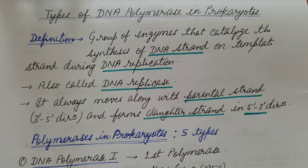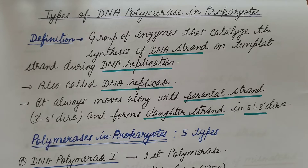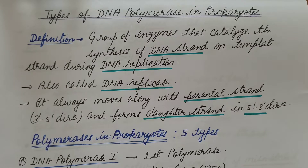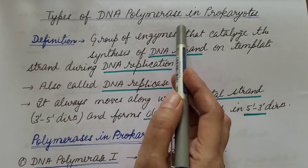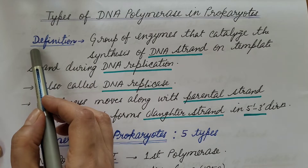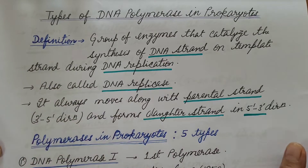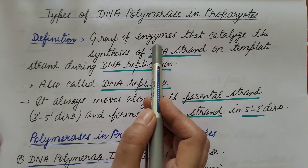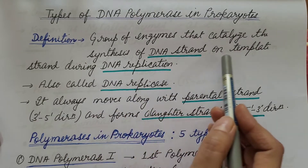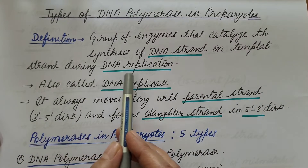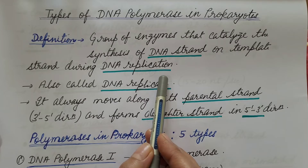Hello friends. In the previous video we discussed about DNA polymerase in prokaryotes — its general features. You can refer to that video; the link is given in the description box. In this video, we are going to discuss about types of DNA polymerase in prokaryotes. DNA polymerases are a group of enzymes that catalyze the synthesis of DNA strands on a template strand during DNA replication.